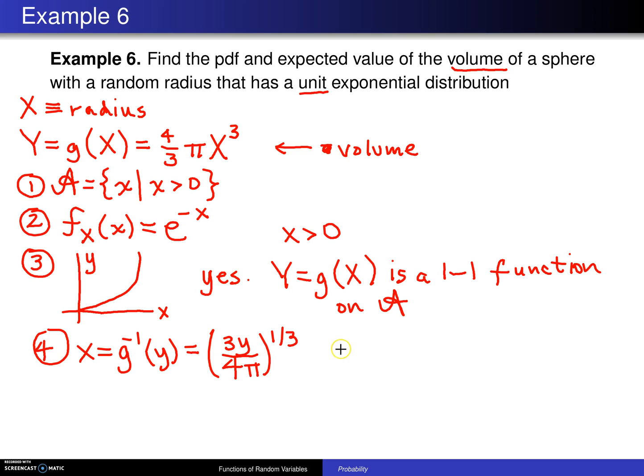Now in addition we know we're finding that inverse because eventually in the formula we are going to need dx/dy, and when you take dx/dy you get one over four pi times three Y over four pi to the negative two-thirds power. And so that is the derivative after some simplification.